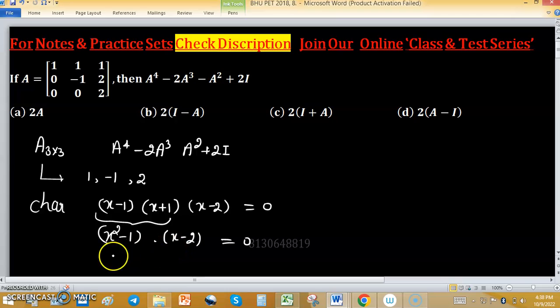Now, multiply these two factors, we have x cube minus x minus 2x square plus 2 equals to 0.